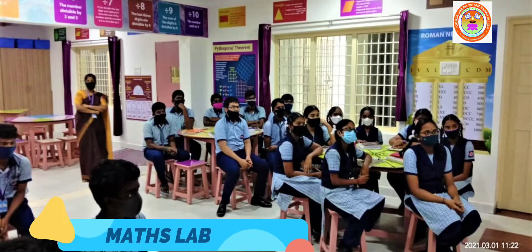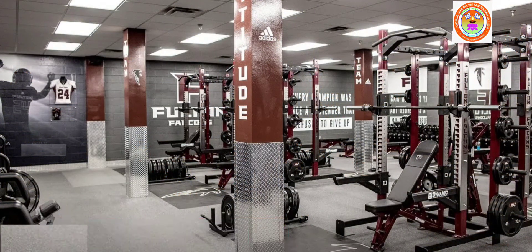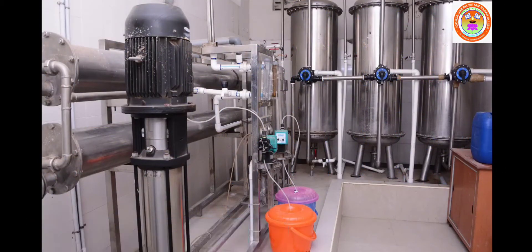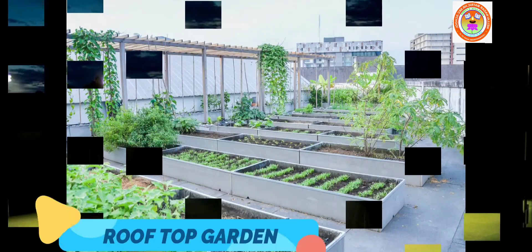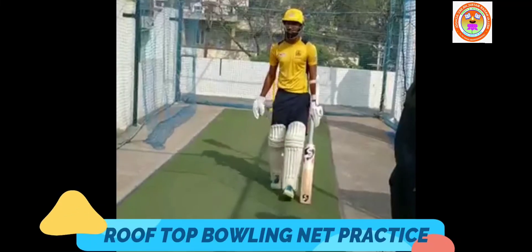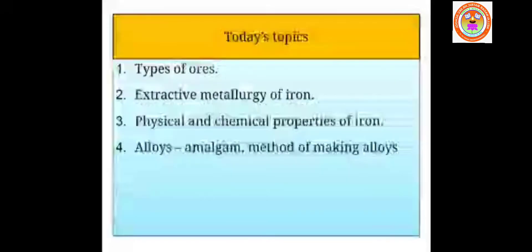Good morning, children. We had already learnt the extractive metallurgy of two metals — aluminium and copper. Today, we are going to learn the extractive metallurgy of another metal, that is iron.